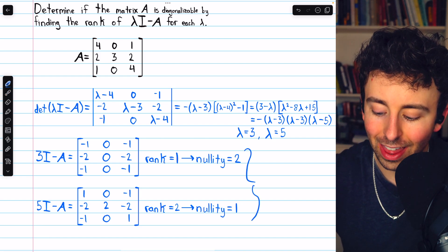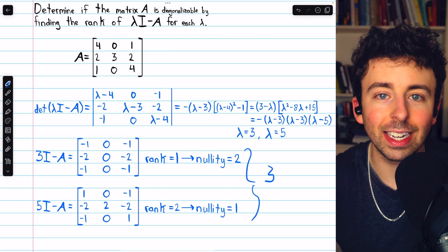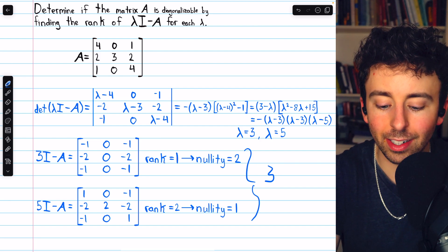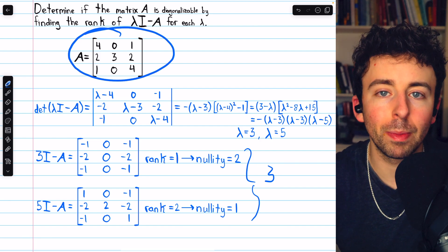In total, we have three linearly independent eigenvectors, which is exactly how many we need to diagonalize our 3 by 3 matrix.